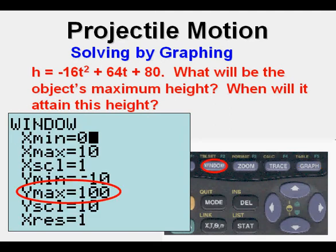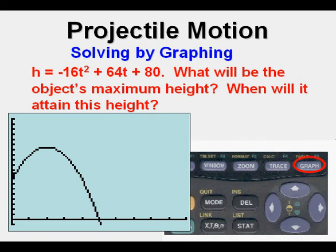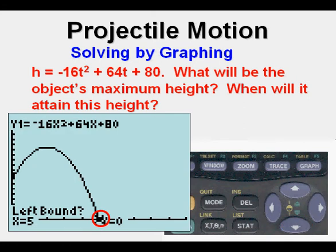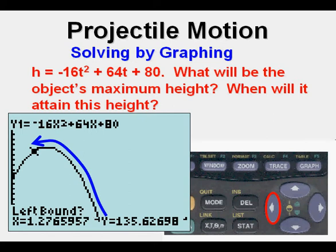We can take that 100 and adjust it up to 200 and we can see the top. How are we going to evaluate that? What I would do is I would go to second trace, and since we're trying to look for the maximum height we go to maximum, press enter, and it's asking us for a left bound. So we arrow up to the left side of that vertex, press enter.